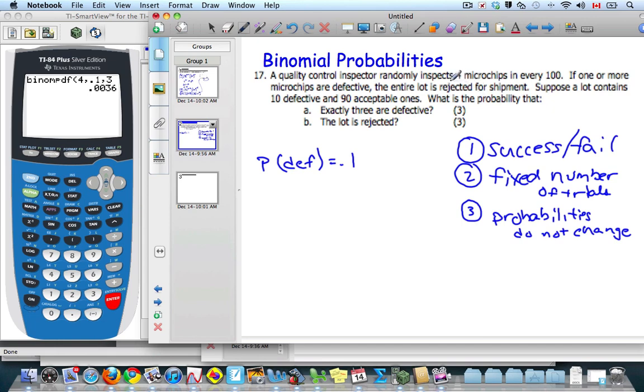And from time to time, the probabilities do not change. Let's put a restriction on here. Let's say the quality control inspector grabs a microchip, looks at it, inspects it, throws it in the pile, randomly mixes them up again, picks it again, does that four times. Then the probabilities do not change. So let's consider those three scenarios.